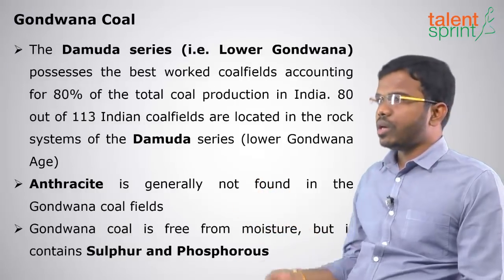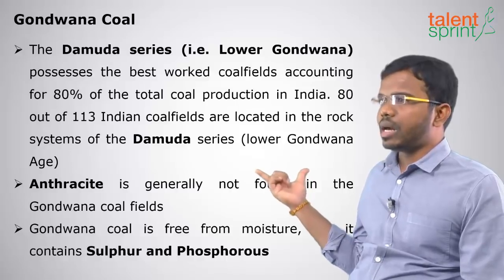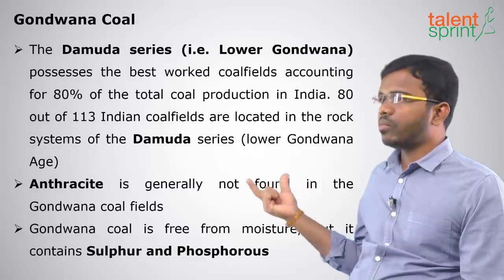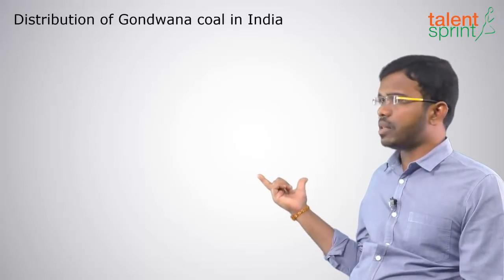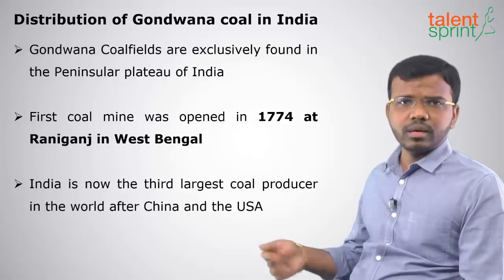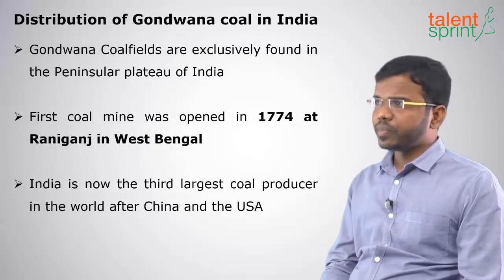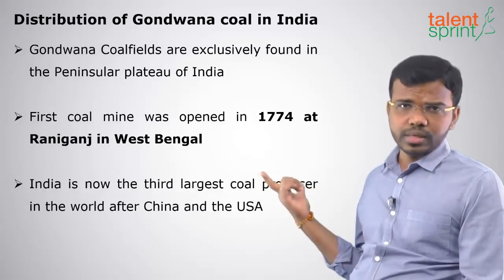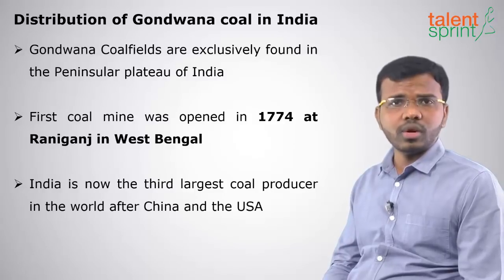The Damodar series of lower Gondwana possesses the best working coal fields in India. Anthracite is generally not found in Gondwana coal fields. Gondwana coal is free from moisture but contains sulfur and phosphorus. Gondwana coals are distributed in the peninsular plateau. The first coal mine was opened in 1774 at Raniganj, which is a very famous coal field in West Bengal. India is now the third largest producer of coal in the world after China and USA.